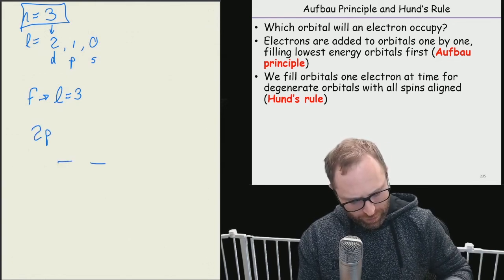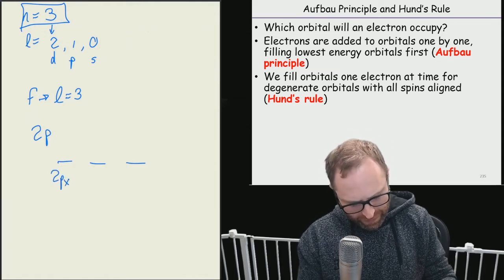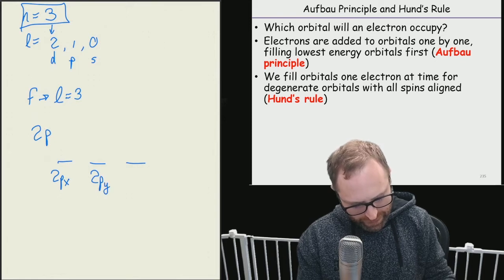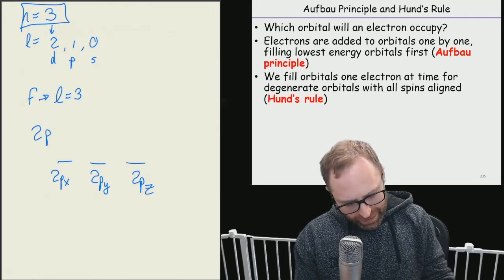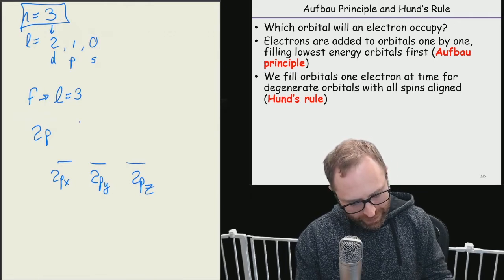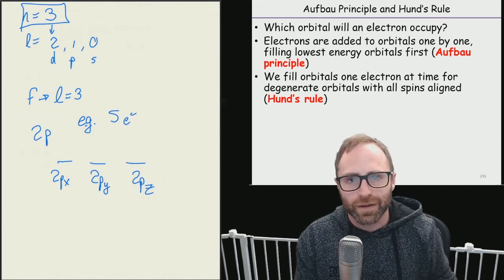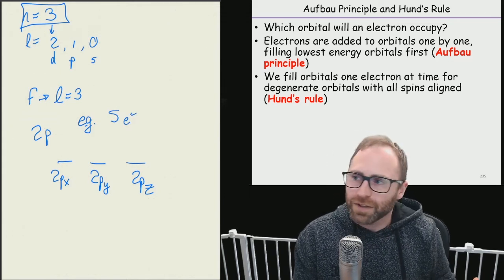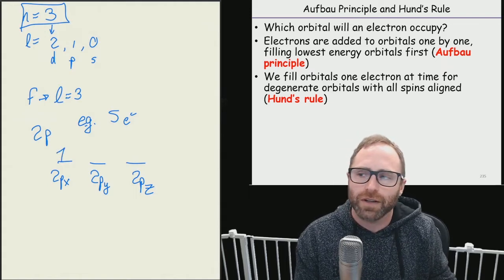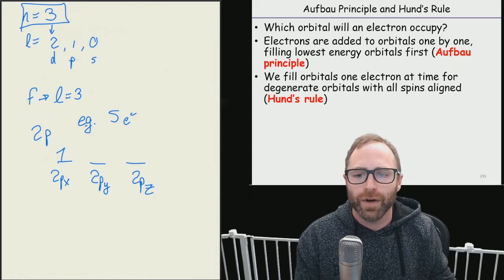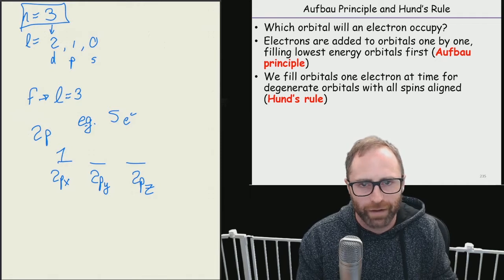One, two, three orbitals. So this we could say our 2px, 2py, and our 2pz. And if we had to place, for example let's say we had five electrons that we had to fill, Hund's rule is going to tell us that we put an electron in and we draw electrons with these little half arrows. We never use a full arrow for an electron. Sometimes books will do that, it's wrong. It's always these little half arrows.